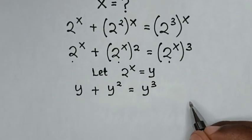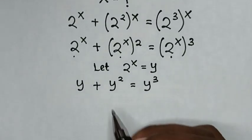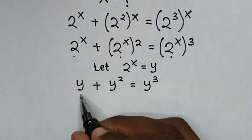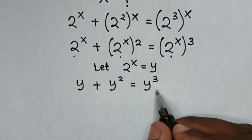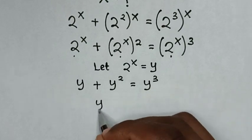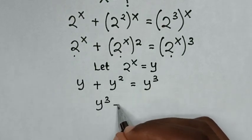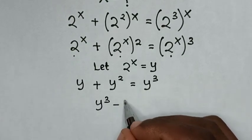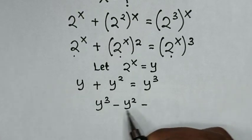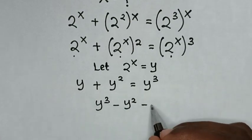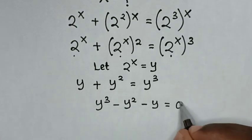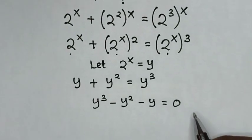Then in the next step, we take y squared and y to the right side. So it will be y cubed minus y squared minus y is equal to 0.